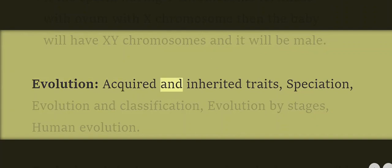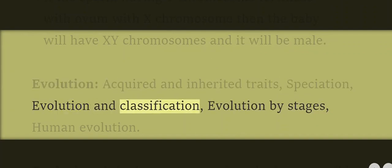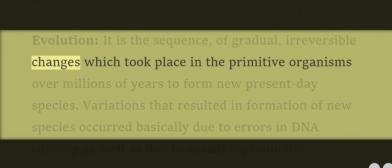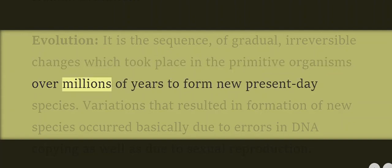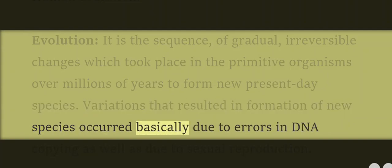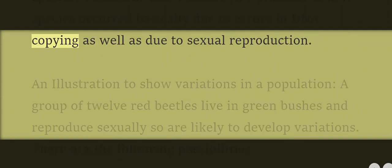Evolution: acquired and inherited traits, speciation, evolution and classification, evolution by stages, and human evolution. Evolution is the sequence of gradual, irreversible changes which took place in primitive organisms over millions of years to form new present-day species. Variations that resulted in the formation of new species occurred basically due to errors in DNA copying as well as due to sexual reproduction.